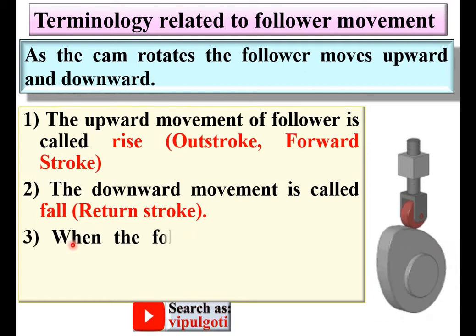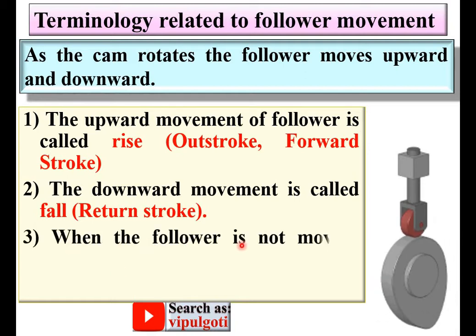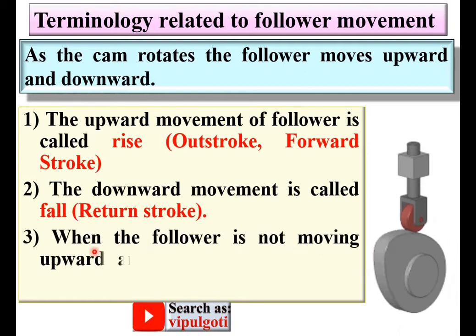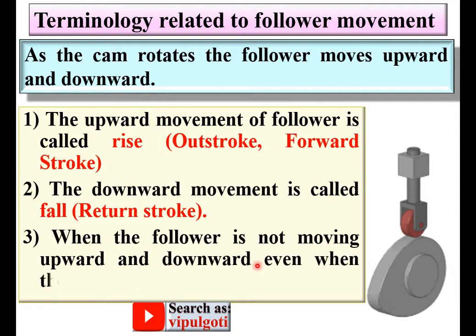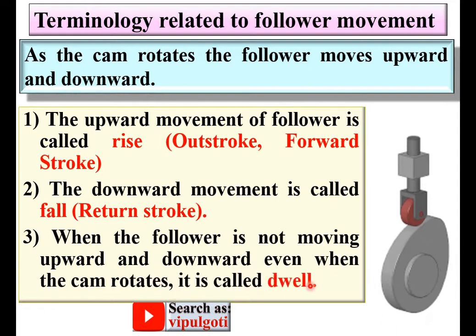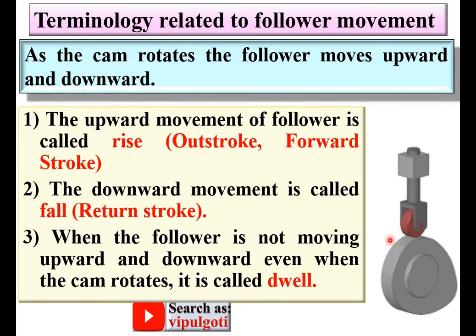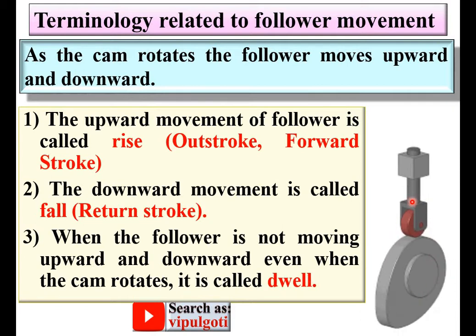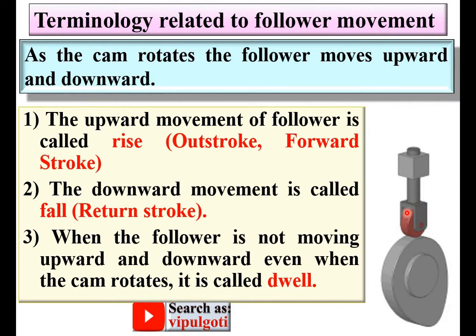Third, when the follower is not moving upward or downward even when the cam rotates, it is called dwell. Here you can see the cam is continuously rotating but there is no movement of the follower — this particular period is known as dwell.